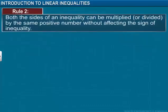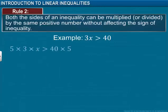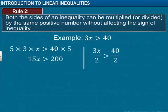Both sides of an inequality can be multiplied or divided by the same positive number without affecting the sign of inequality. Consider the example shown here — the value of this inequality does not change if we multiply it by a positive number. Similarly, the nature of the inequality does not change by dividing both sides by a positive number.